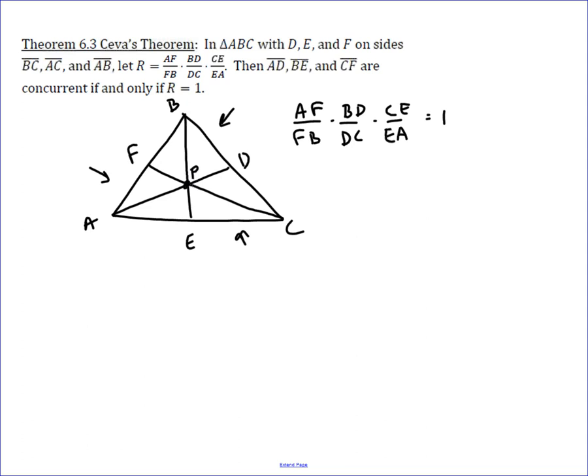There are two ways you use this theorem. First, you use it to prove that three cevians in a triangle are concurrent — meaning they all meet at a single point. The other use is: if you know they are concurrent and you know some of the side lengths, you can quickly find something else. For instance, if you knew certain segment lengths were 2, 3, 4, and 5.